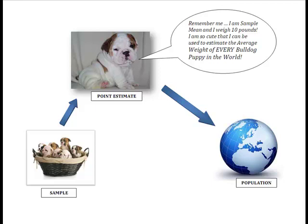In other words, draw the sample, calculate a point estimate, which could be a proportion or an average, and then use it to estimate the average weight of every bulldog puppy in the entire world. Well, how the heck do we do that? I'm going to show you right now.